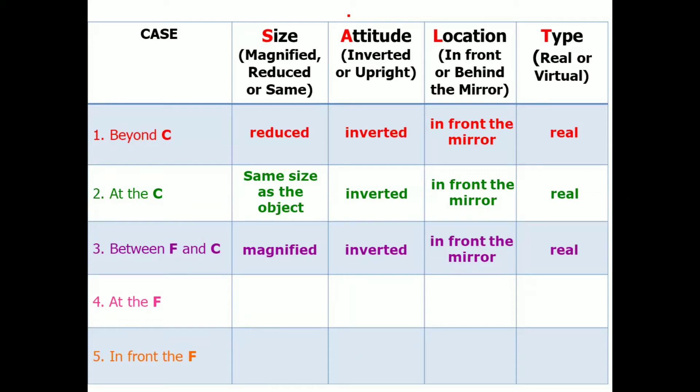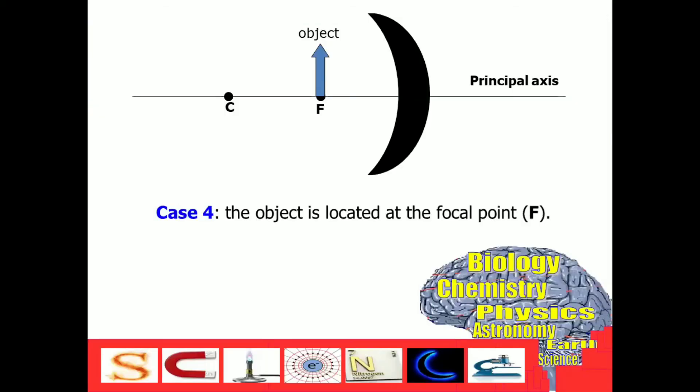How about case number four? We place the object at F or the principal focus or also called as focal point. And the result for case number four? No image formed.